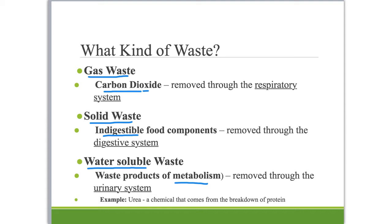A key example of a substance that your urinary system gets rid of is urea, which comes from digesting proteins and breaking them down, especially if we're using those proteins as a source of energy. Urea is a chemical that you want to move out of your body because too much of it is a problem.